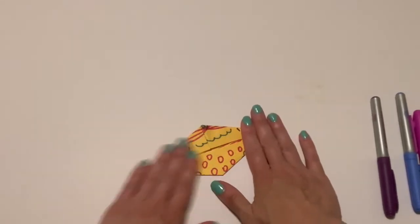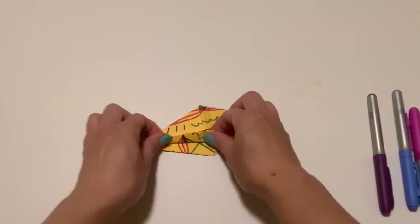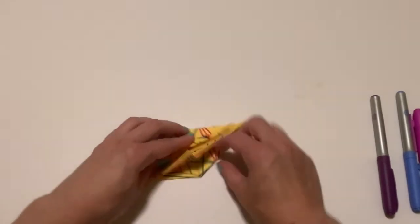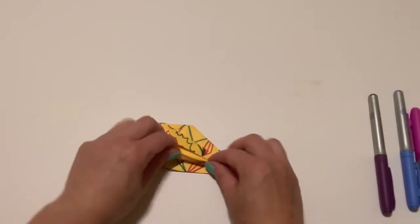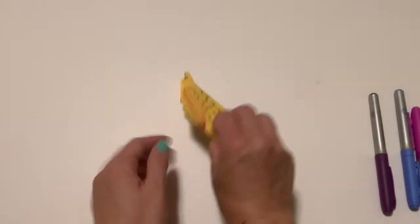Once I have done that I have two little parts that I can move at the bottom. Then I'm going to fold inward again on both sides, on the front and also on the back.